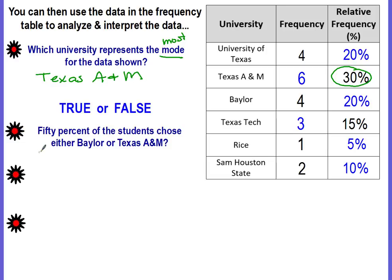These are true or false statements. Statement: fifty percent of the students chose either Baylor or Texas A&M. Baylor was 20 percent; if we add Texas A&M, that was also 20 percent, so that's a total of 40 percent. The statement says 50 percent, so this is false.